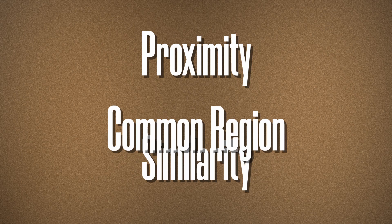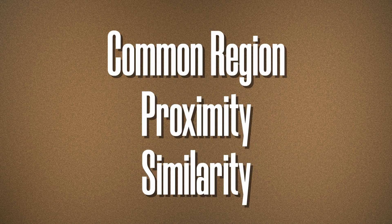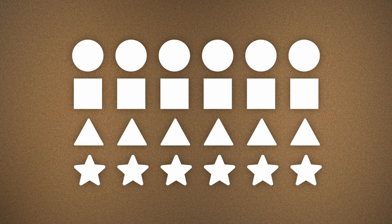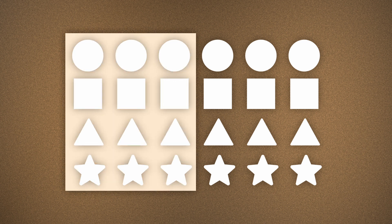The most interesting fact is that common region overrides both similarity and proximity. Even if two elements are placed closer to each other and perceived as a group, if you divide them into two sets under different backgrounds, they will actually be perceived as two separate groups — which was not the case with proximity alone. Try this experiment: there are different kinds of objects that could be classified by similarity, but once you put a background behind them, the grouping changes entirely.